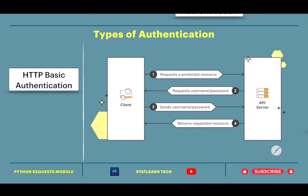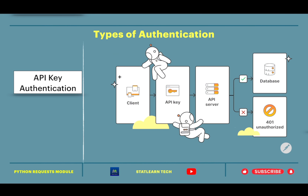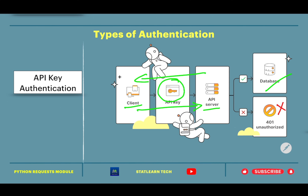The second type is API Key Authentication. Again, a client wants to access the API server. The client makes a request and along with it sends an API key. If the API key is correct, the server responds with the data. If the API key is wrong, the server responds with a 401 Unauthorized access response.